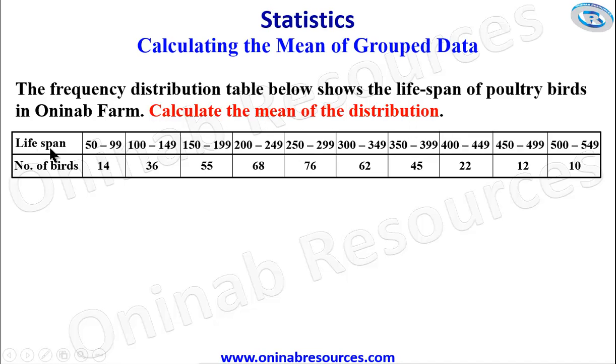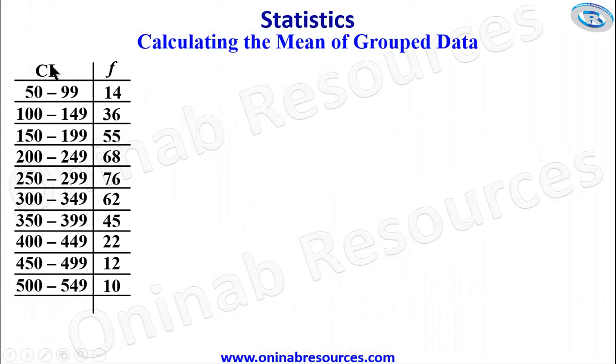The lifespan is given as intervals and the number of birds are also given. So we go ahead to calculate the mean of the distribution. We arrange our table in a vertical form with the class interval and the frequency, for the first column being the class interval of the lifespan and the number of birds being the frequency. We have our formula for the mean as summation of fx over summation of f.